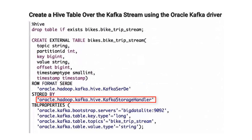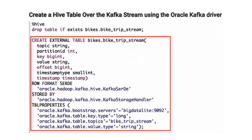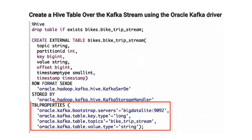This storage handler enables Oracle to query Kafka streams through Hive. So with this CREATE EXTERNAL TABLE statement, we create a Hive metadata table over the Kafka stream, then reference the Kafka topic that the producer generates in the table properties clause.